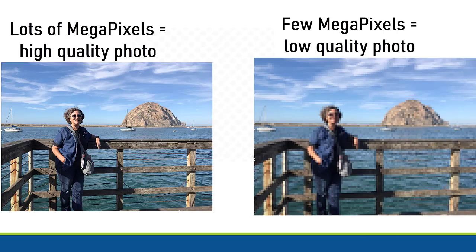Lots of megapixels means high photo quality. Few megapixels means low photo quality — like this example — and this is what's called being pixelated. There are very few pixels, so it looks blurry.